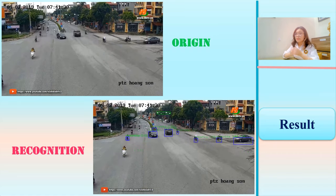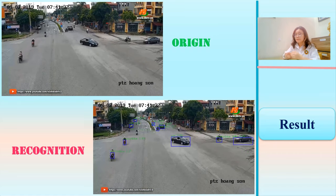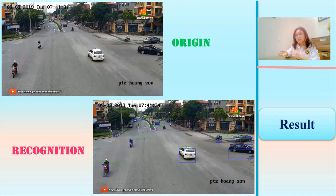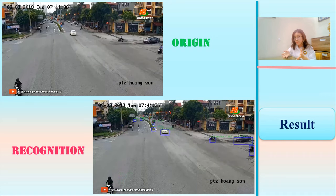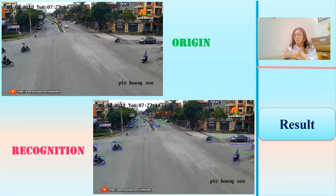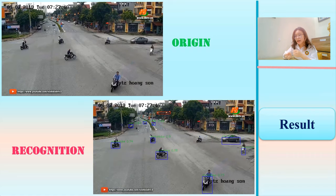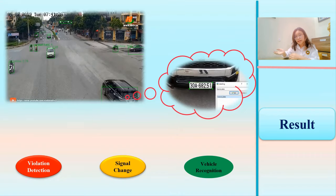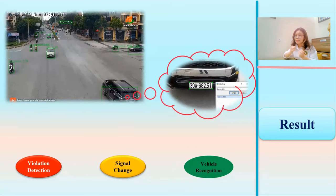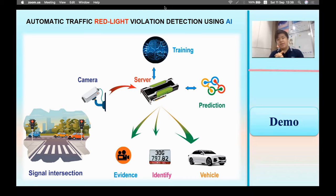We will show you a demo by simulating traffic at an intersection from a captured video. When our model is applied to frame analysis and vehicle detection, bounding boxes will track the movement of each vehicle. The traffic signal light will be recognized in real time. If the signal turns red and a vehicle crosses the stop line, the bounding box of that vehicle will change color. By combining multiple cameras in different directions, we will detect the license plate of the violating vehicle and record the evidence.